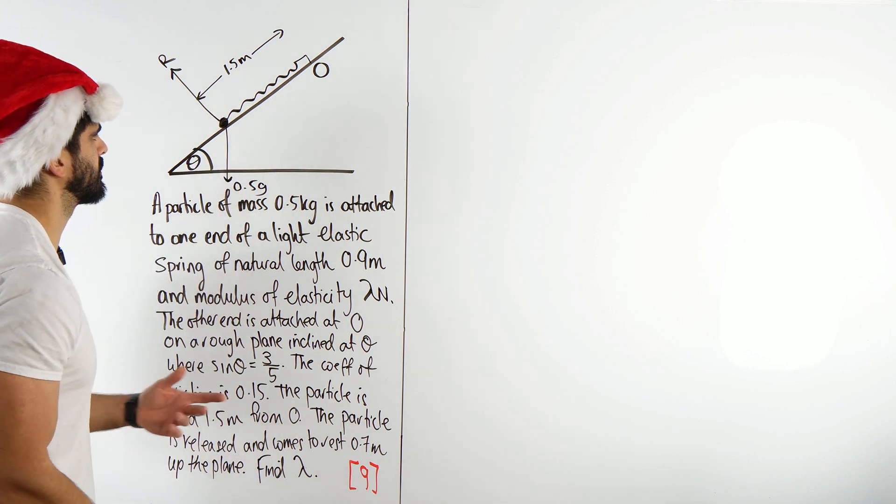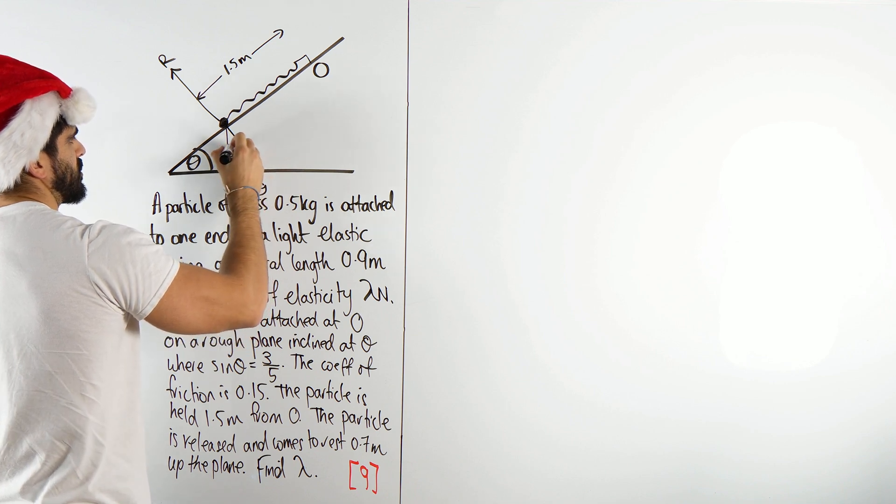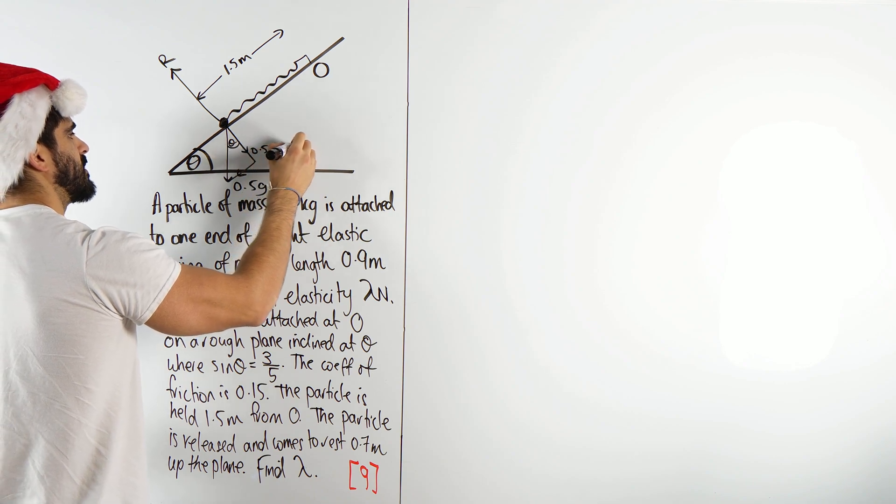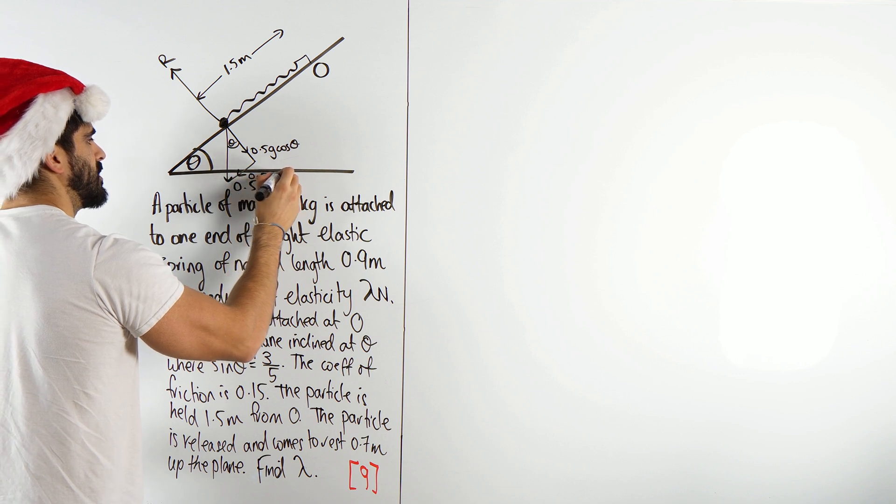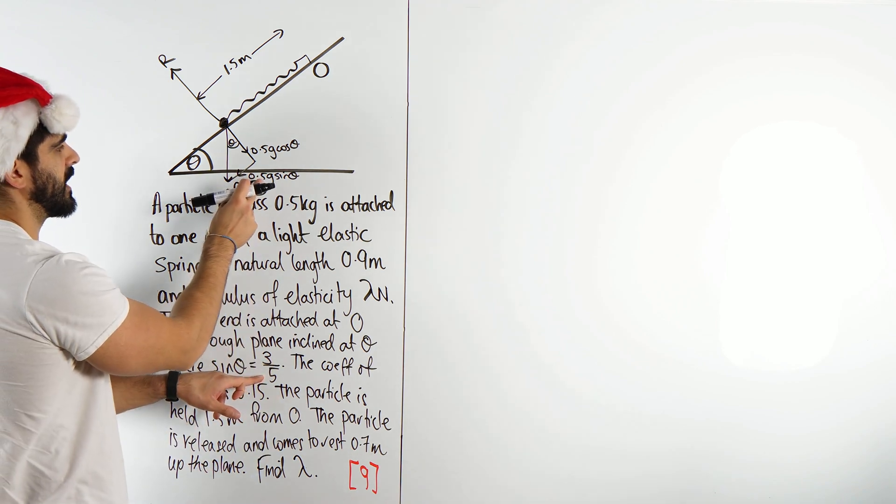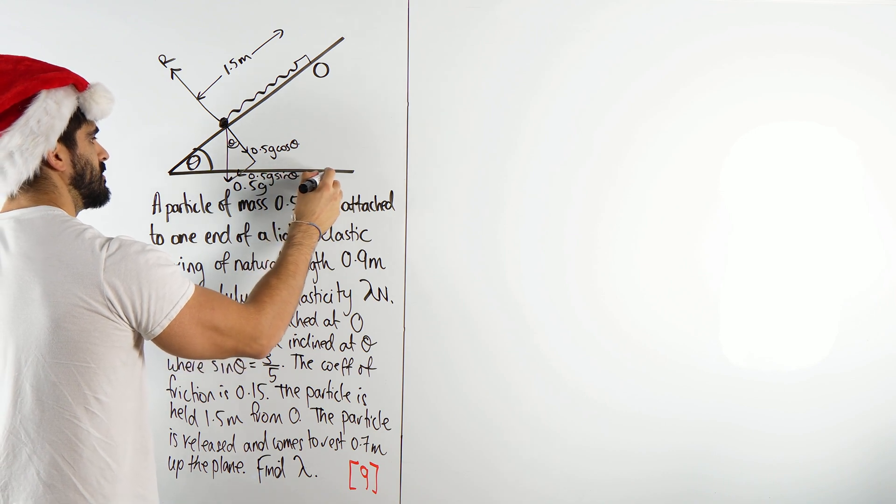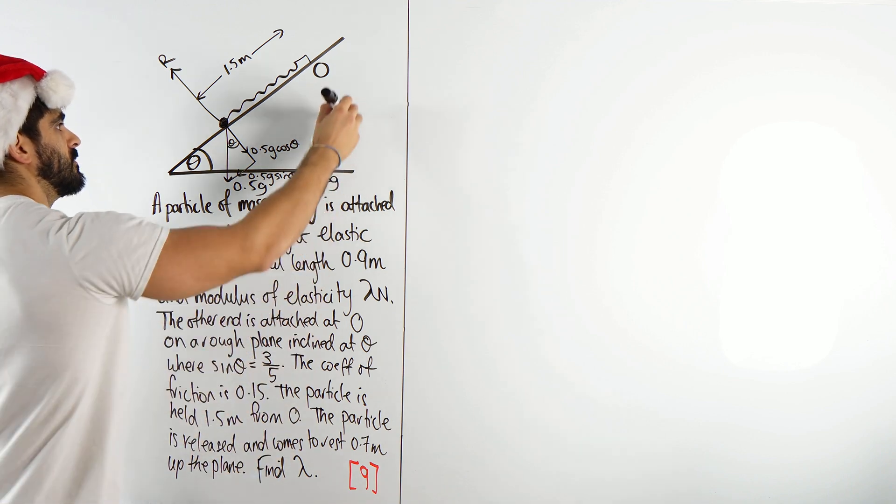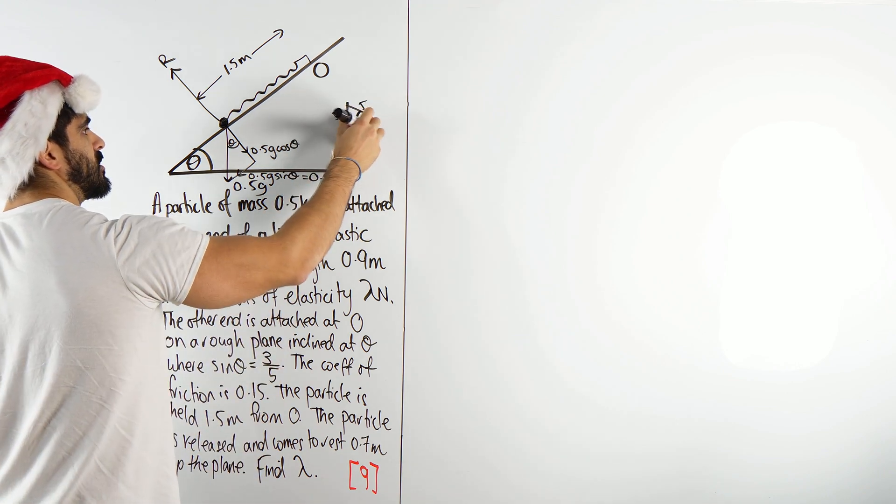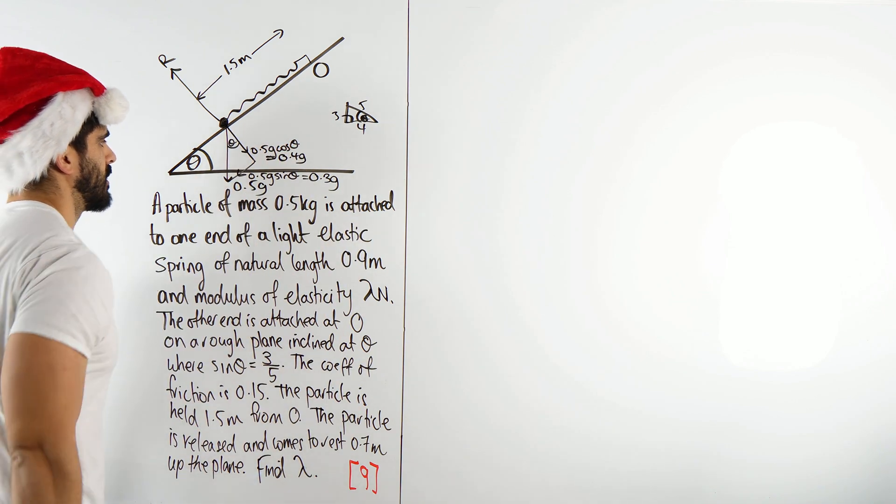That should be resting on the plane. Now, the next thing I'm going to do is resolve this because it's just a standard thing to do. So this would also be theta. The adjacent side would be 0.5g cos theta and this would be 0.5g sin theta. We know sin theta is three fifths. So we divide by 5, you get 0.1 times 3 equals 0.3. So this is 0.3g. If you do your triangle, theta angle 3, 5, this would be 4. So cos theta is four fifths. So this would be 0.4g.